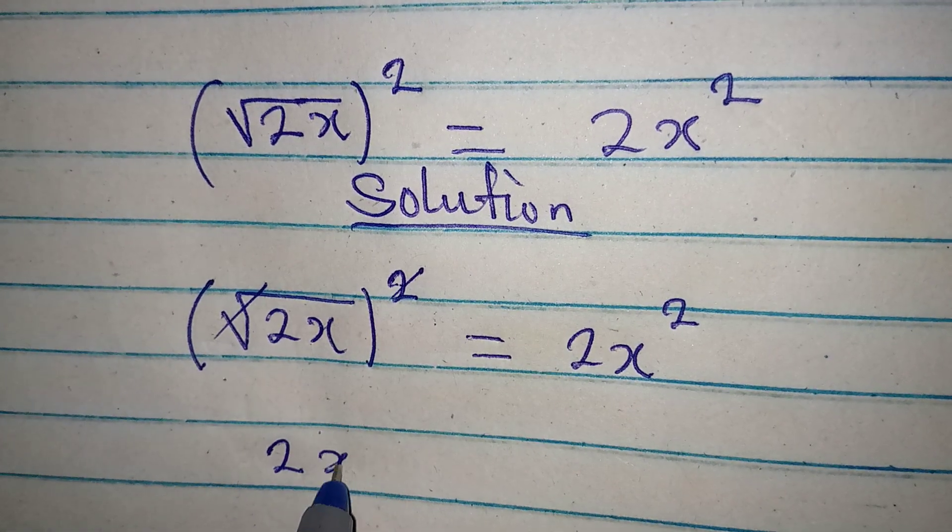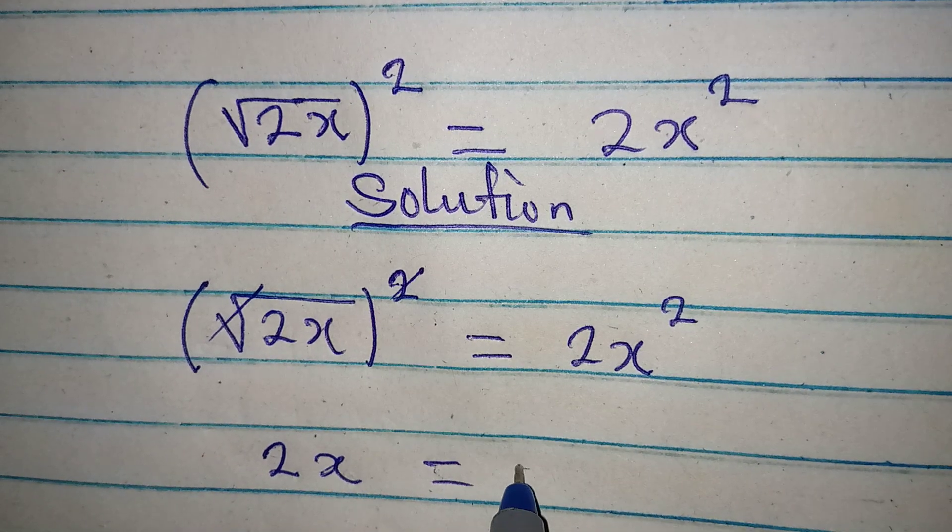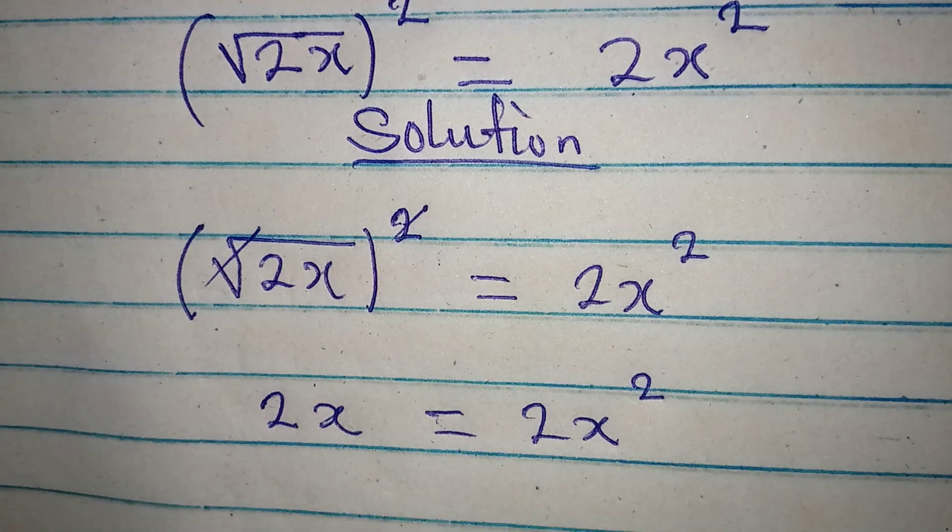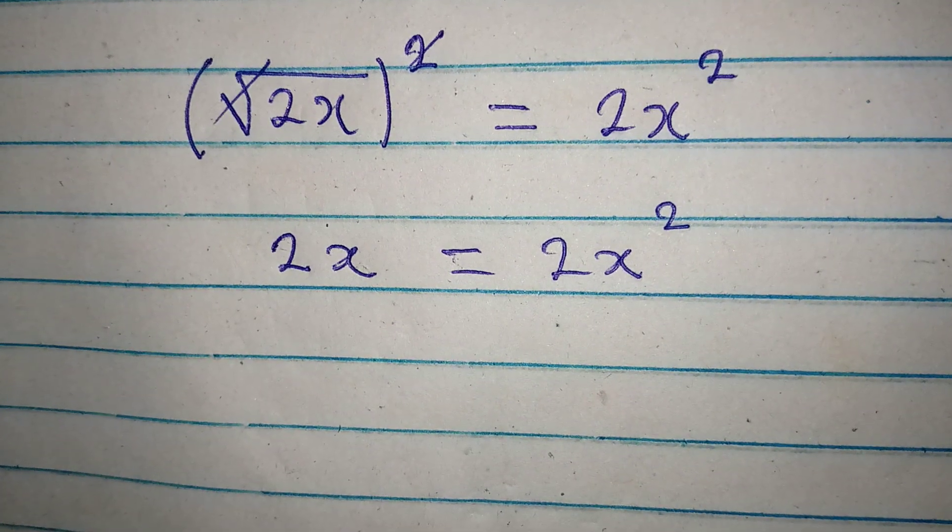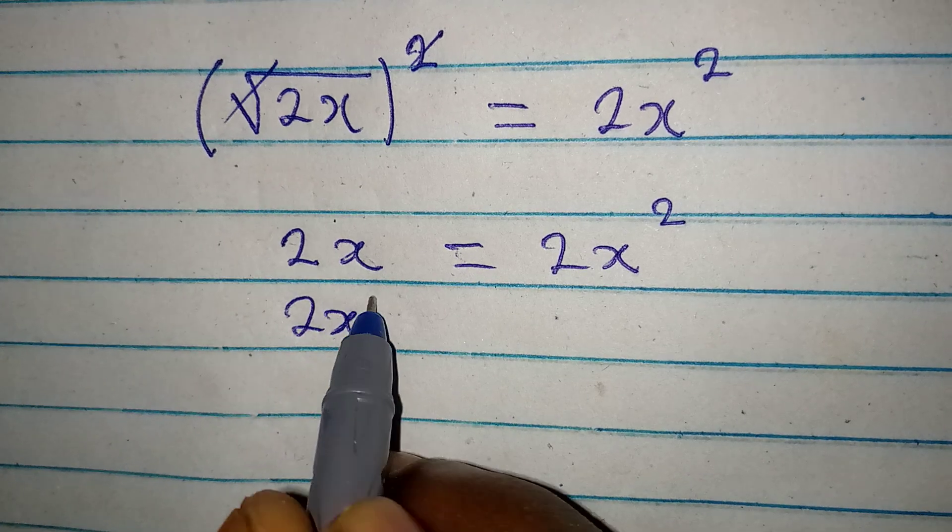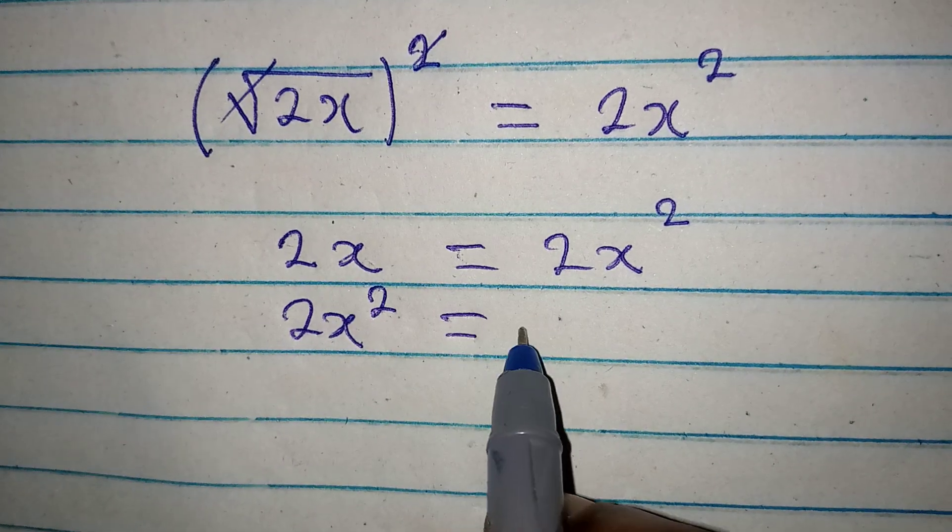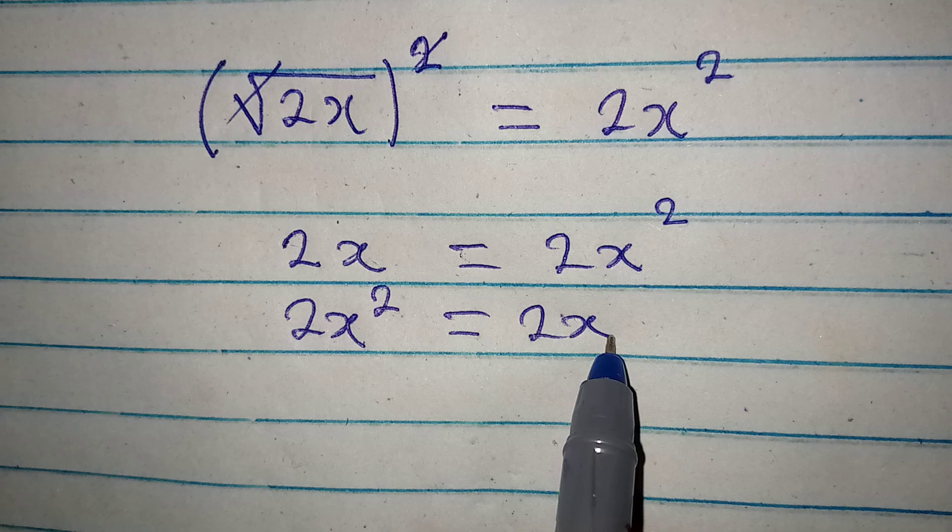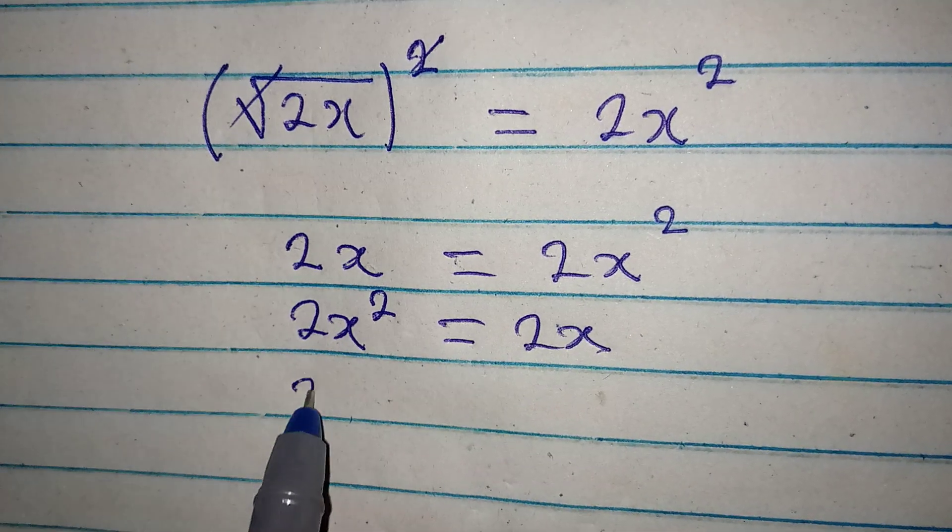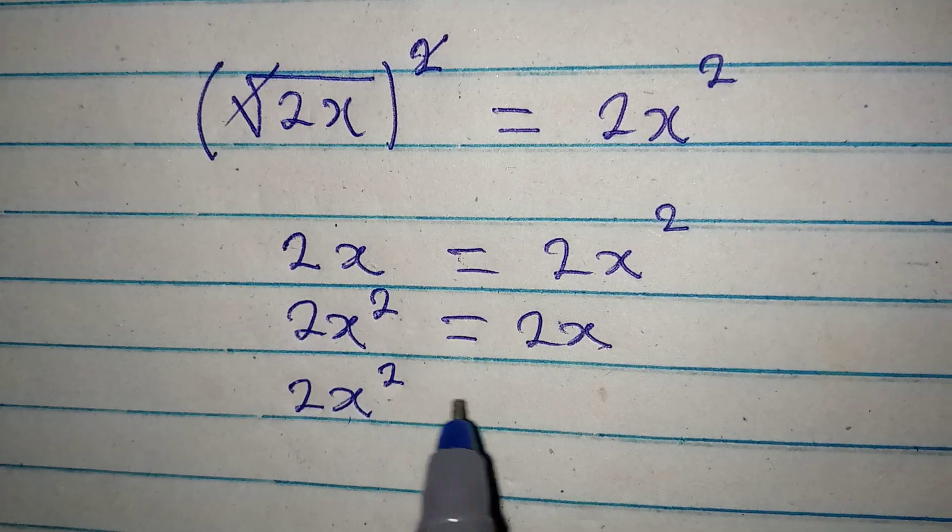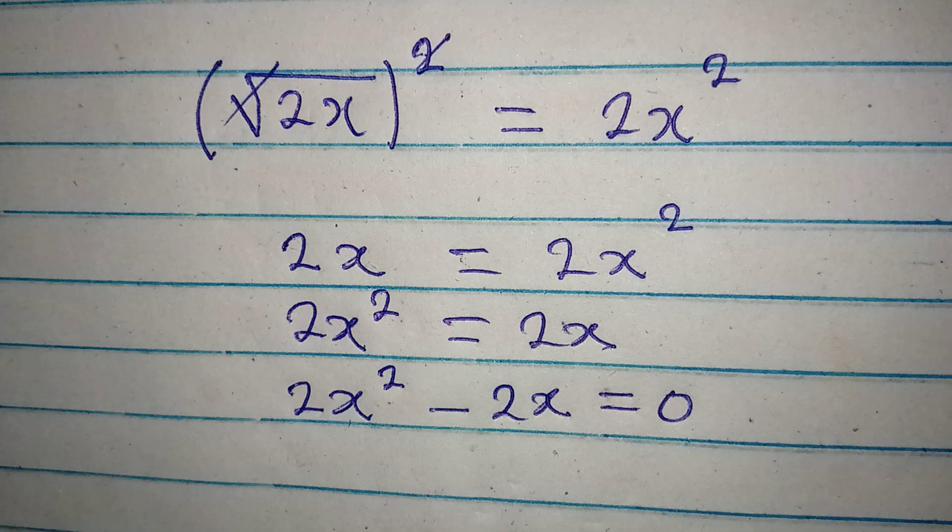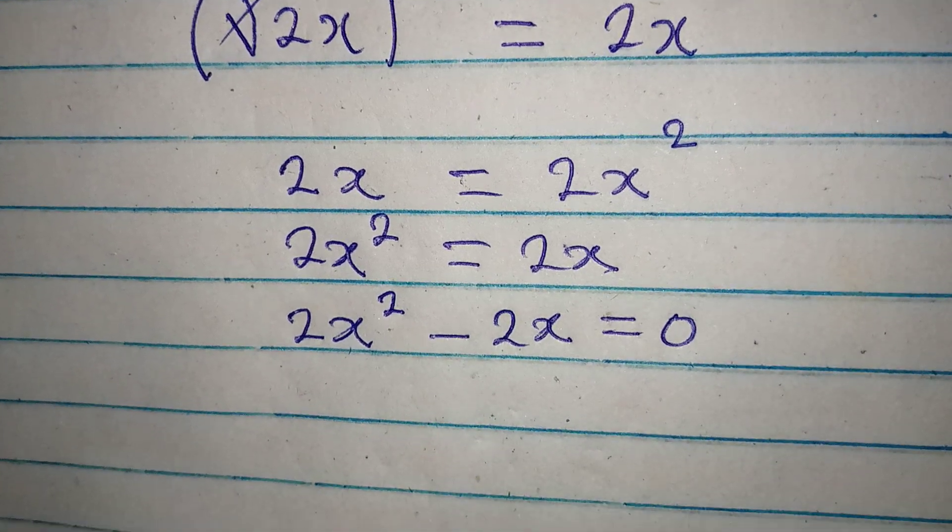That 2x is equal to 2x squared. From here let's write this first, this is the same thing as 2x squared equal to 2x. Then bring this to the left so we have 2x squared minus 2x equal to zero.